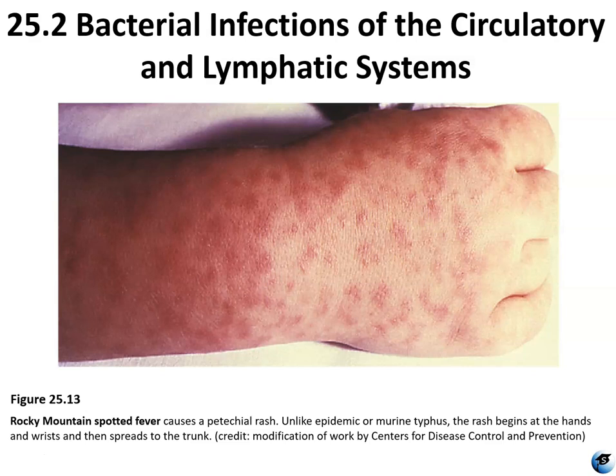Initial symptoms of Rocky Mountain spotted fever may include fever, nausea, vomiting, severe headache, muscle pain, lack of appetite, and rash. Later signs include abdominal pain, joint pain, and diarrhea. The characteristic rash is usually not seen until about day 6 or 7, and only 35 to 60% of patients develop it; 50 to 80% of those show the rash only on the palms or soles. Antibiotic treatment — most commonly tetracycline and chloramphenicol — should be given immediately, even before laboratory confirmation. Despite treatment, about 3 to 5% of persons still die from the condition. Figure 25.13 shows the rash, which begins at the hands and wrists and spreads to the trunk.